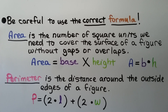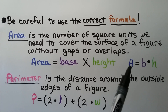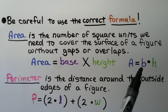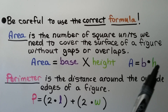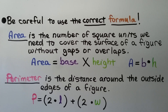Be careful to use the correct formula. Area is the number of square units needed to cover the surface of a figure without gaps or overlaps — formula: A equals b times h. We can use a dot for multiplication so we don't confuse it with the variable x. Perimeter is the distance around the outside edges of a figure — formula: P equals 2 times the length plus 2 times the width.